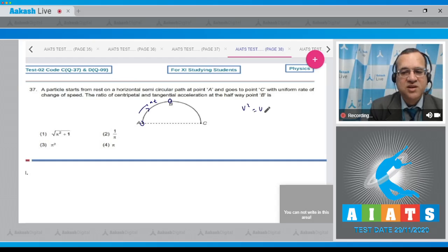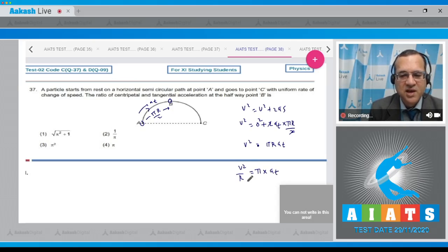We can use the formula v square is equal to u square plus 2a for constant acceleration. Therefore, velocity at this point v square is u was rest 0 plus 2 acceleration is tangential acceleration, and this distance is equal to pi r divided by 2. So v square is equal to pi r at. Take r to left hand side - pi into at, and this is the centripetal acceleration.